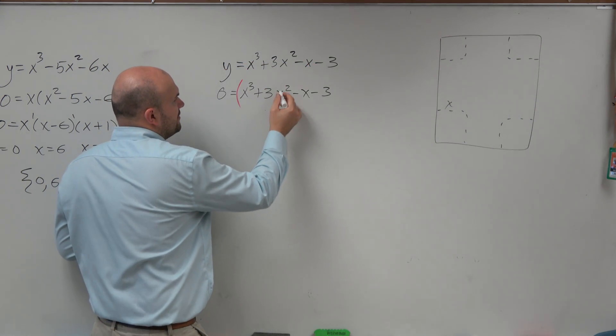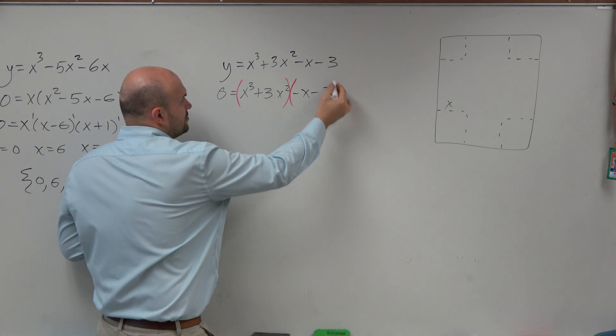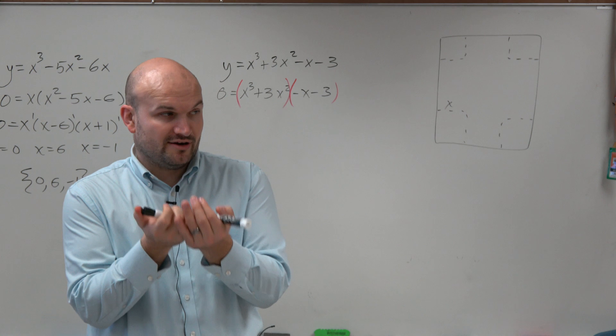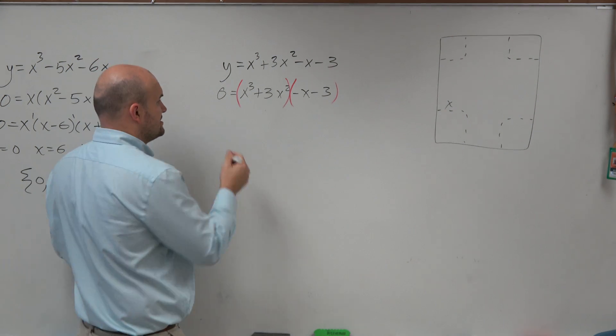So what we can do is group the first two terms, group the second two terms. Then, from those grouping, we're going to factor out the GCF, or the greatest common factor.